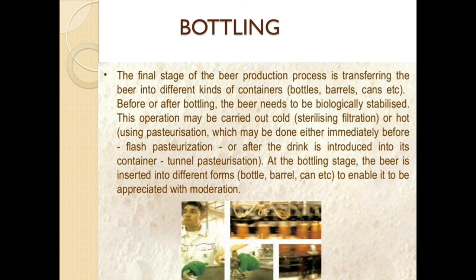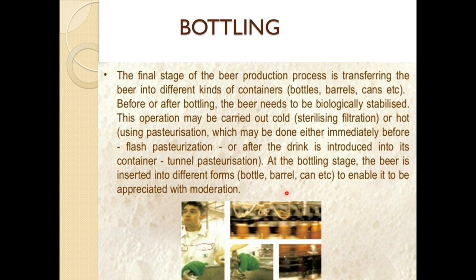The final stage is bottling. The beer is transferred into different kinds of containers like bottles, barrels, and cans. Before or after bottling, the beer needs to be biologically stabilized. This may be carried out by cold sterilization filtration, or hot using pasteurization — either flash pasteurization immediately before filling, or tunnel pasteurization after the beer is introduced into its container.